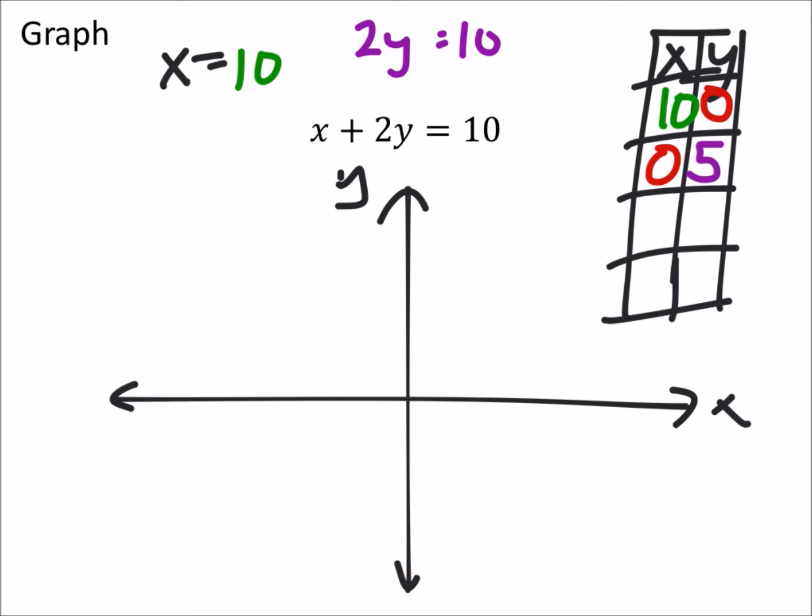So that gives us two nice points to graph, which is really all we would need for a straight line like this. But we can find another point just to check. Let's go ahead and graph these first.